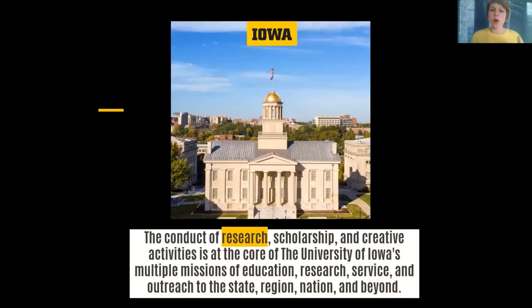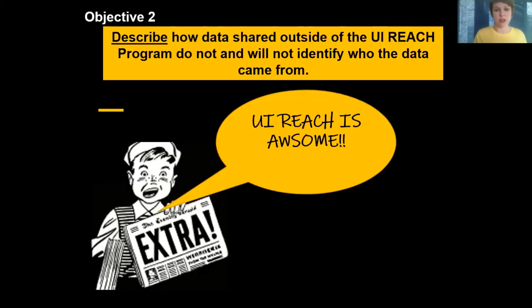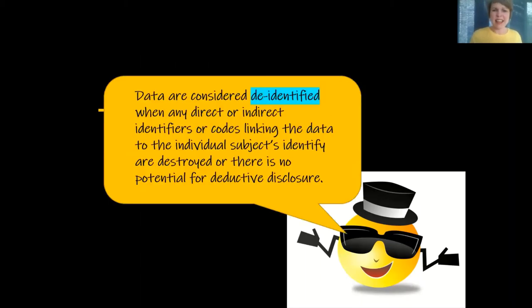At UI REACH, remember, you are part of the University of Iowa and you're a Hawkeye. We are committed here to research. So when we are collecting data and sharing it outside of the program, that is research. But in research, we do not identify who that information comes from — we de-identify all the information that is shared. De-identified means that all names are removed, so there is no way to figure out exactly who we're talking about.